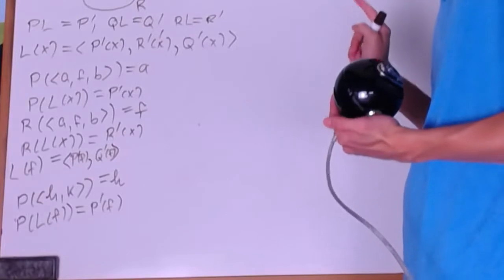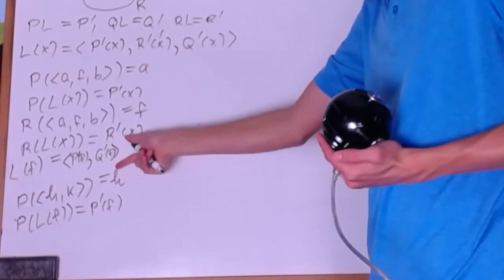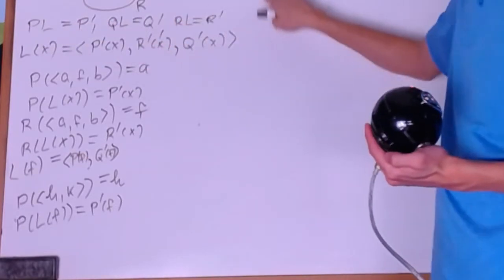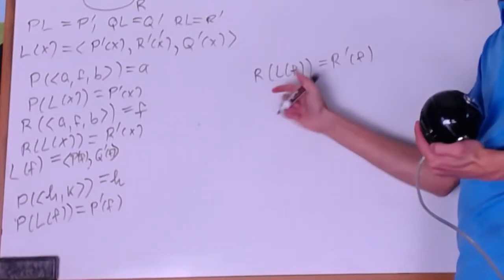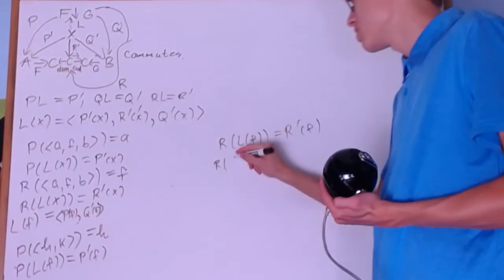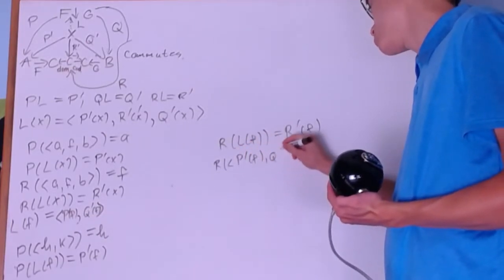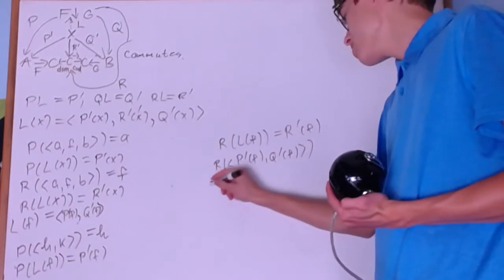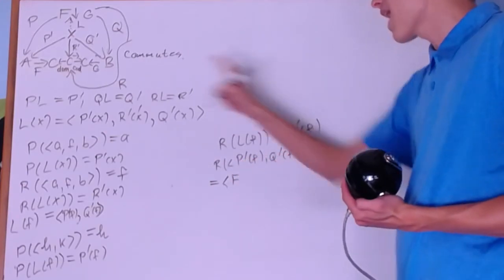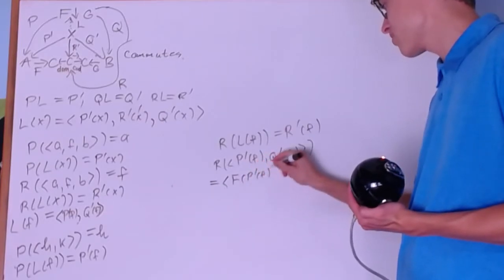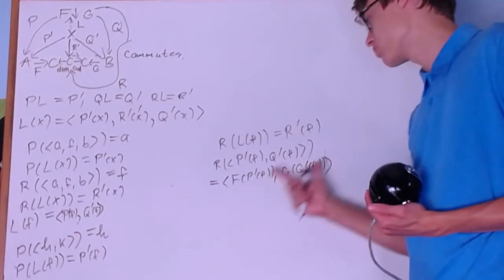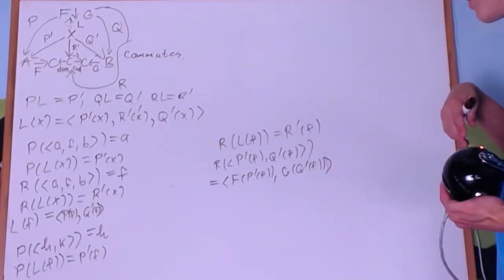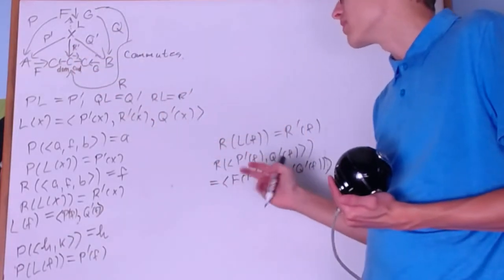The only thing I really have to prove is that these arrows commute with R, because R is not involved here — there's no uniqueness argument, and we didn't base it off of this property. So, how do I know that R of L of F is equal to R prime of F? Let's first figure out what R of L of F is. L of F is the pair (P prime of F, Q prime of F). Then R of anything is just the functor F applied to the first coordinate P prime of F, and G applied to the second component Q prime of F. So this is the pair we're left with. How do I know this is equal to R prime of F? I'll use the commutativity of the original diagram to prove this.